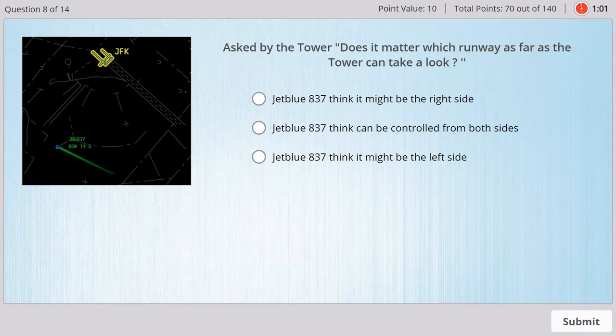JetBlue 837, at the moment you're set up for the RNAV to runway 13L. Does it matter which runway as far as the side, so that the tower can take a look? We think it might be the left side. The airplane jerked to the left. So we think if it was a tire, it would probably be on the left side. Would you rather then land on 13R? That way the tower would probably have a better view of the left side. Yeah, we can do that. If we set up for 13R. Yeah, if we could do the RNAV RNP 13R. We'll do that for JetBlue 837. All right, let's do that. JetBlue 837 set up for the RNAV RNP, runway 13R. All right, we'll do that now, JetBlue 837. Thanks.